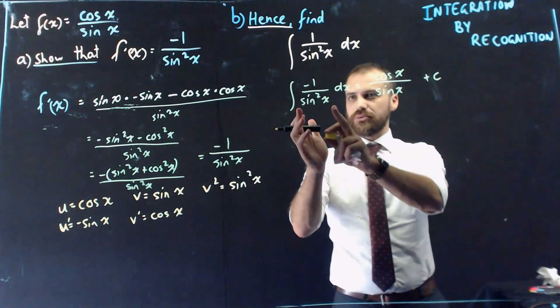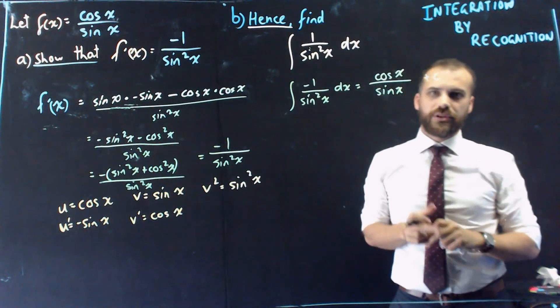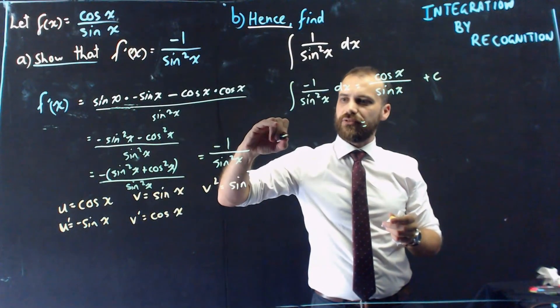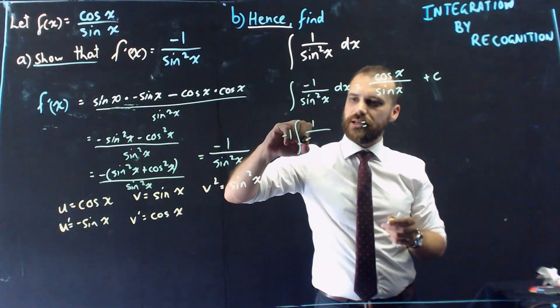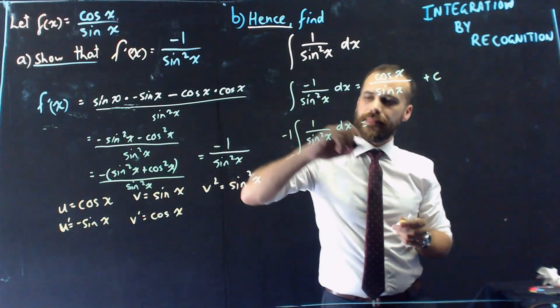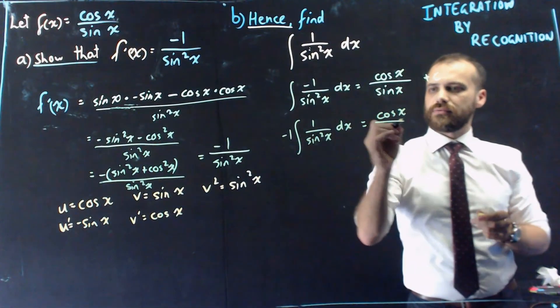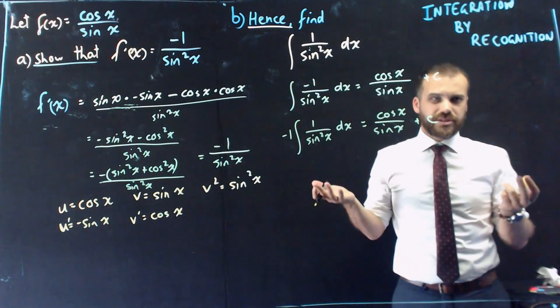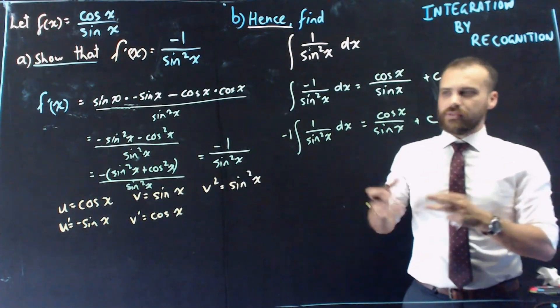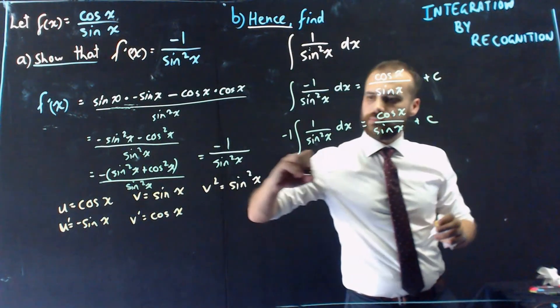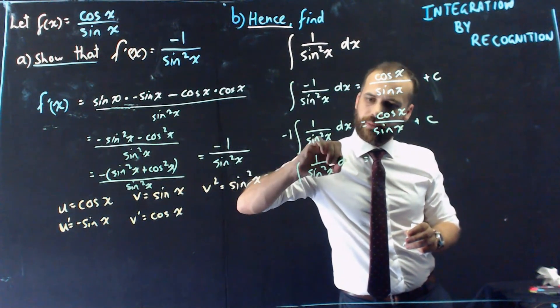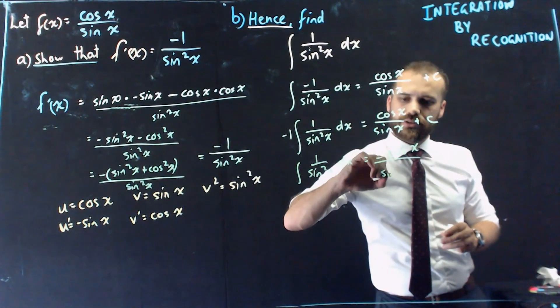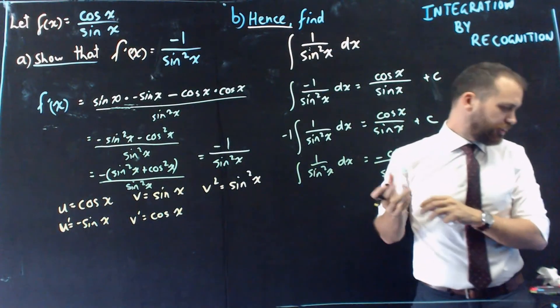So from here, we need to look at the integral we've got and then look at the hence-find integral we want. And the only issue is that this is negative instead of positive. So if I pull that negative out the front, I'll have a positive one instead. This will stay the same for a second. And then I just need to multiply both sides by negative 1 or divide both sides by negative 1. But that negative is going to go from here to here. And I'll get negative cos x over sine x plus c. All that negative can come out the front of the fraction.